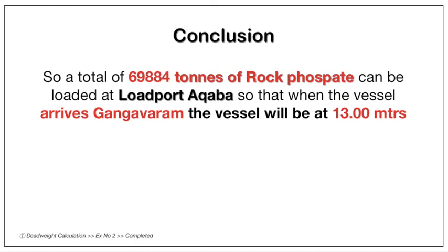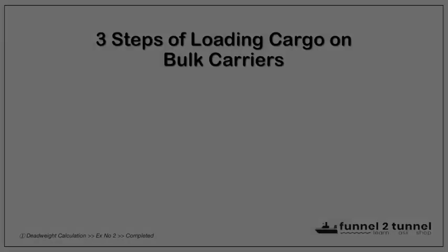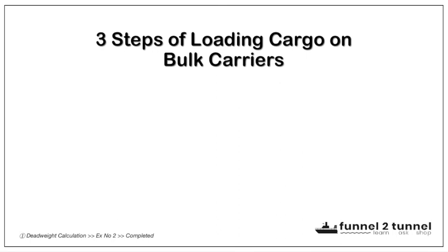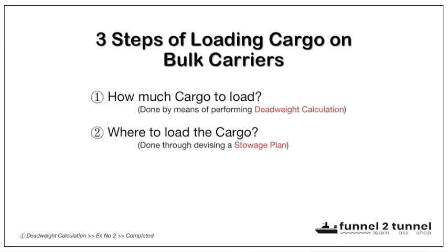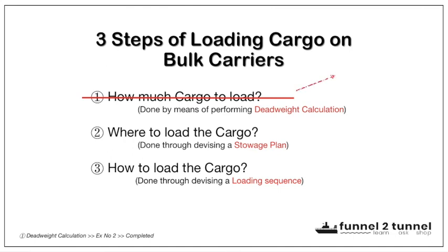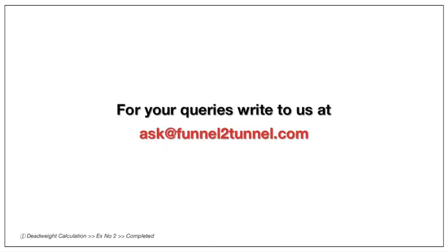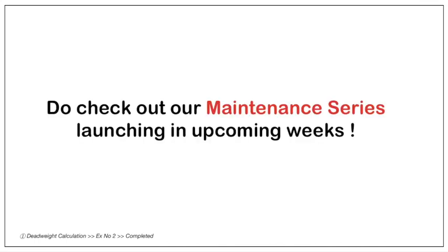The conclusion for this example: a total of 69,884 tons of rock phosphate can be loaded at load port Akaba so that when the vessel arrives at Gangavaram, the vessel will be at 13 meters draft. This is example two — quite different from example one discussed in video one. Out of three steps of loading cargo on bulk carriers, step one is now complete with two examples solved. Thanks for watching. For queries write to ask@funnel2tunnel.com. Also check out the upcoming maintenance series.